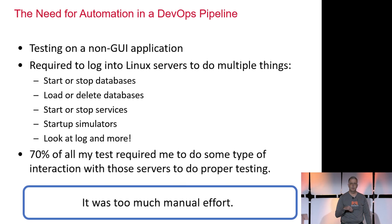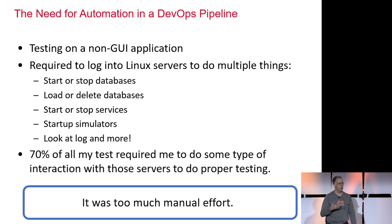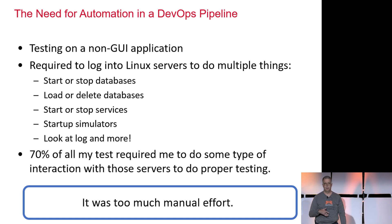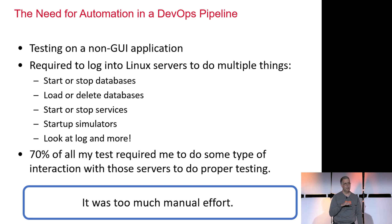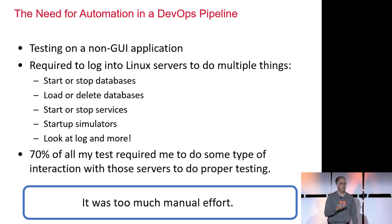What was happening was I was working on a program where I realized I needed to interact not just with a GUI interface, but I needed to log into Linux servers to turn on or turn off services, load databases, wipe out databases, and start or stop simulators. I was uncovering that I would only be able to run about 30% of all the automation I wanted to do if I couldn't interact with my Linux servers. In the government world I work in — very highly complex, large, secure, and isolated systems — I had about 14 different servers I needed to log into.